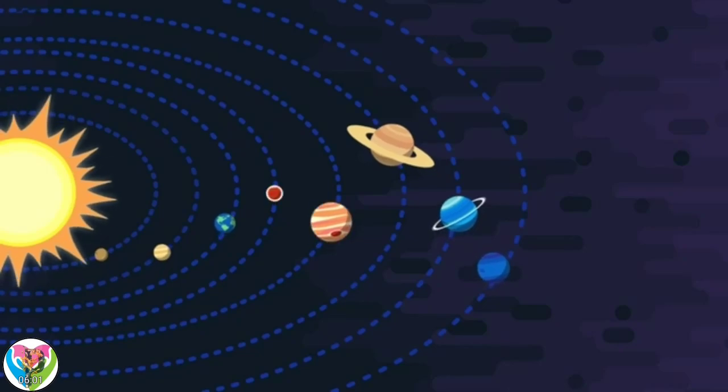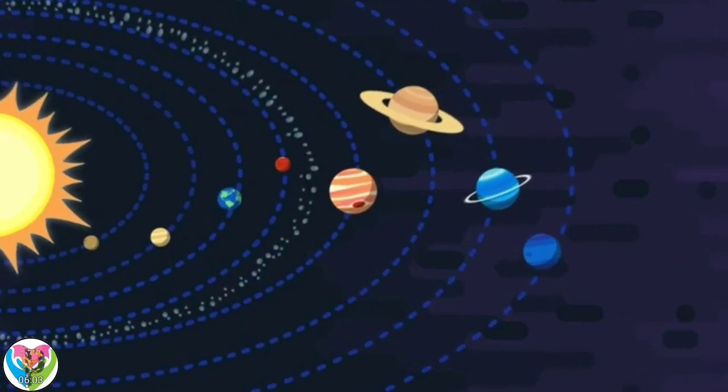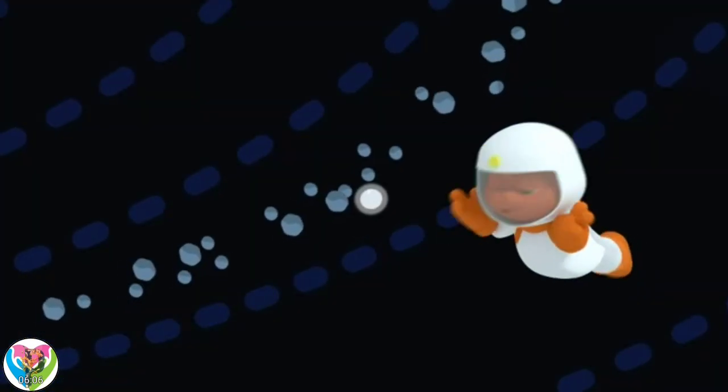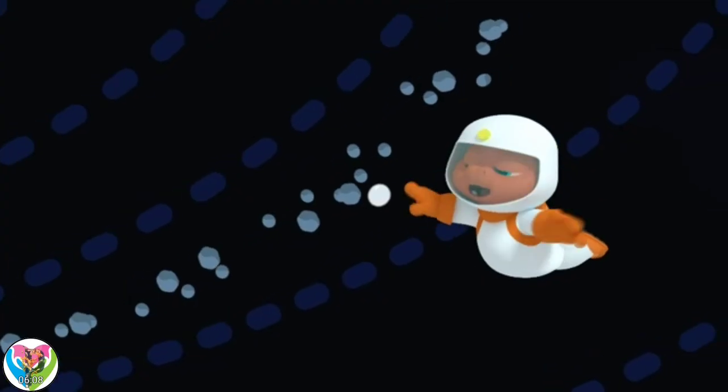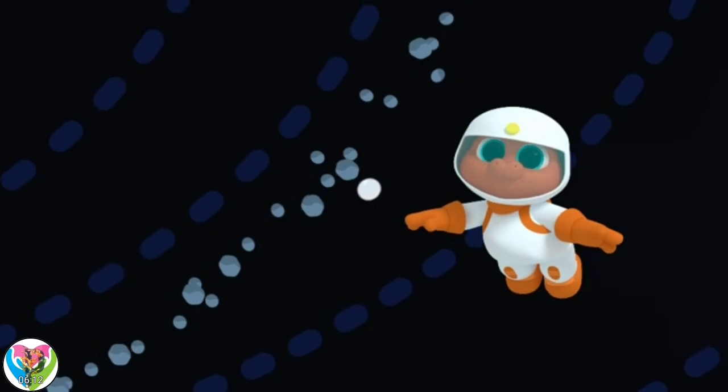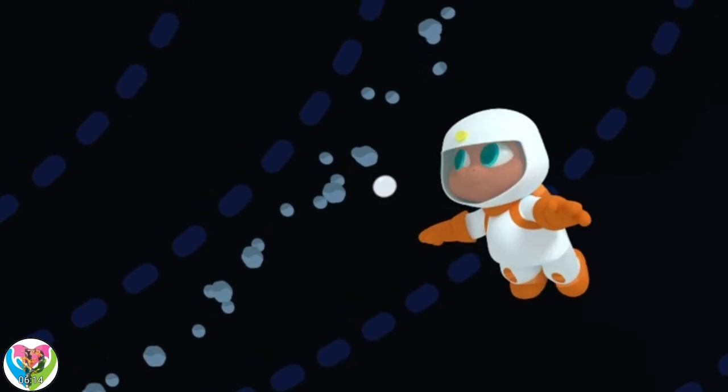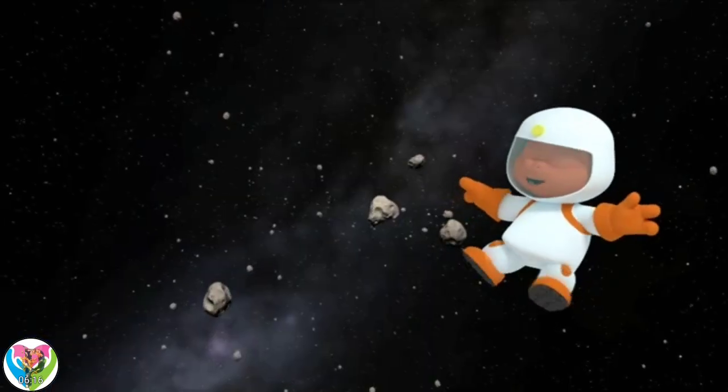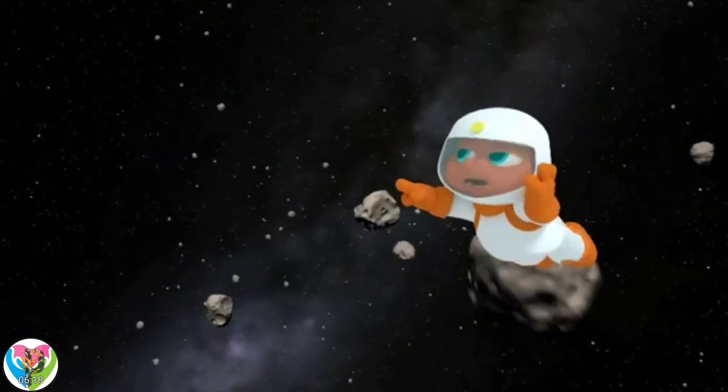Between Jupiter and Mars, there's an asteroid belt. That's where you can find Ceres. Wow, so many asteroids! Because Ceres is a dwarf planet, it still has a lot of things in its path. It must be annoying to keep bashing into things all the time.